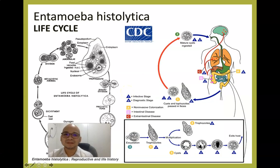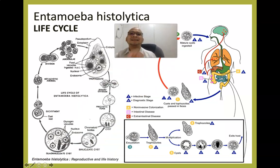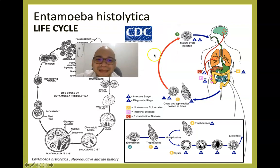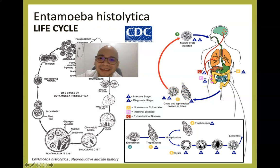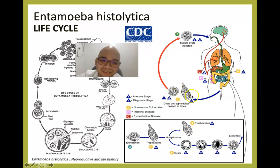Looking at the CDC life cycle: we ingest the cyst, and cysts and trophozoites are passed out in feces because of unhygienic food preparation. The infective stage is the cyst; the diagnostic stage is the trophozoite.